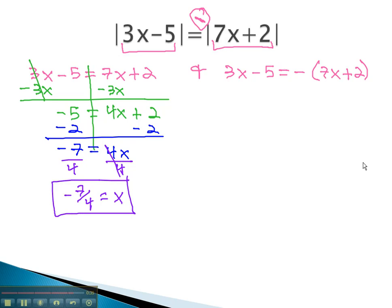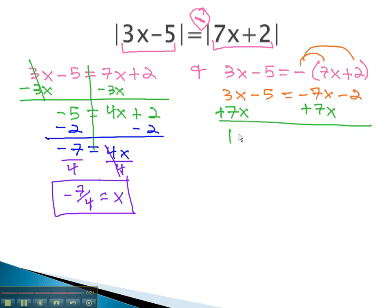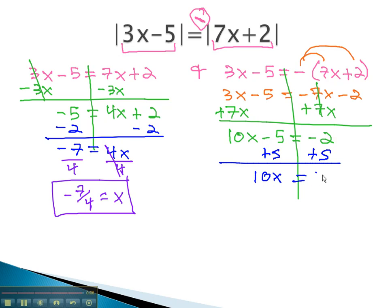Similarly, we solve the second equation by first distributing the negative: 3x minus 5 equals negative 7x minus 2. We move the variables to one side by adding 7x to both, giving us 10x minus 5 equals negative 2. Adding 5 to both sides, we find 10x equals 3. Finally, divide both sides by 10, and x is equal to 3 tenths.